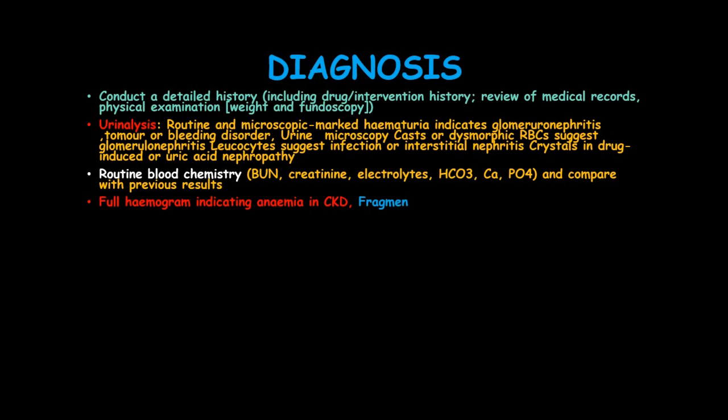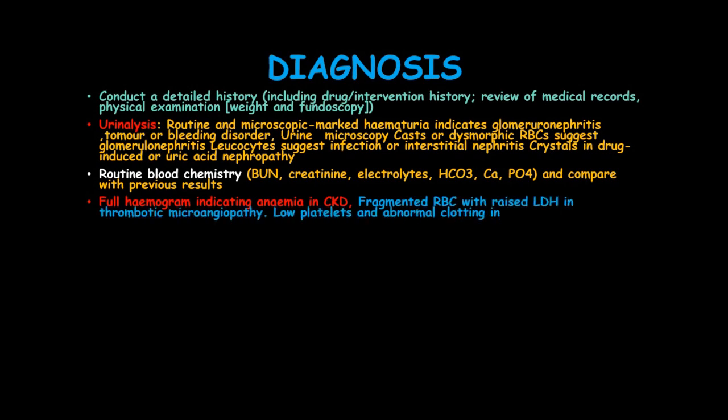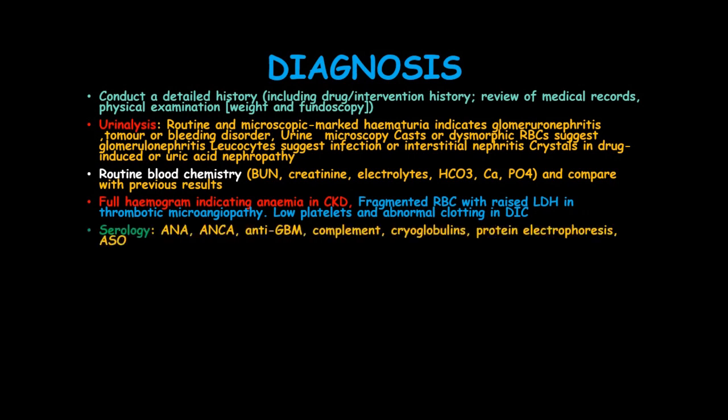Full hemogram indicates anemia in chronic kidney disease and fragmented red blood cells with raised LDH in thrombotic microangiopathy. Low platelets and abnormal proteins indicate disseminated intravascular coagulation. Serology includes ANA, ANCA, anti-GBM, complement proteins, cryoglobulins, protein electrophoresis, and ASO.